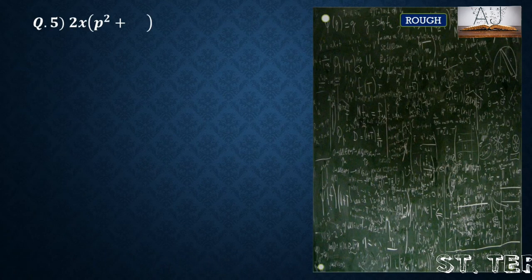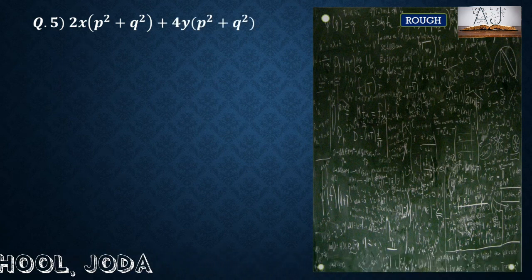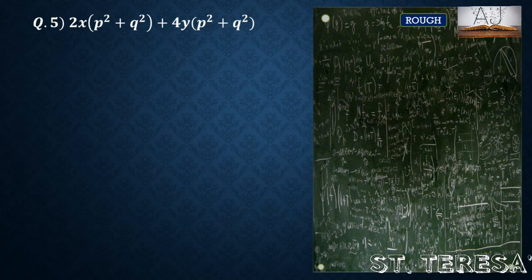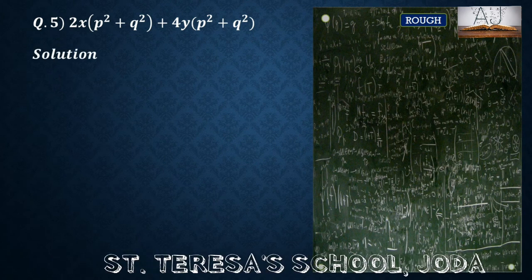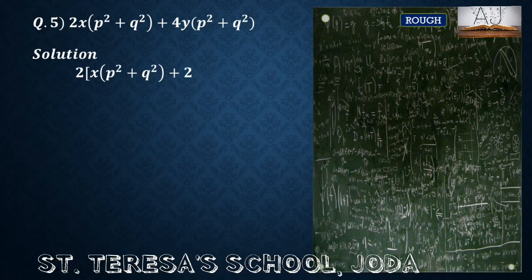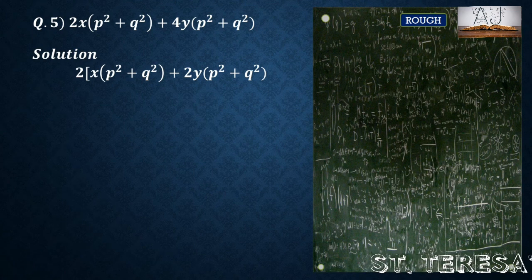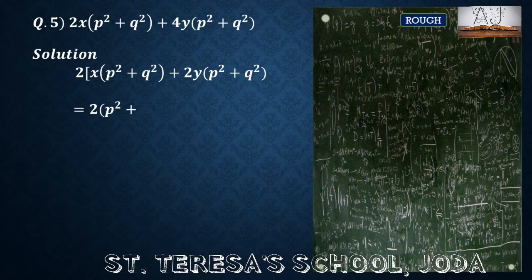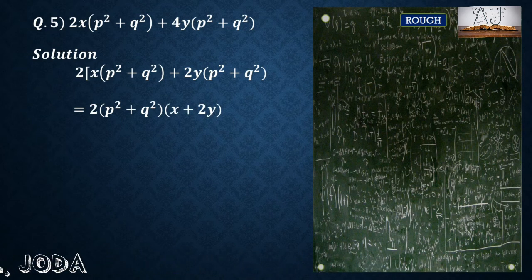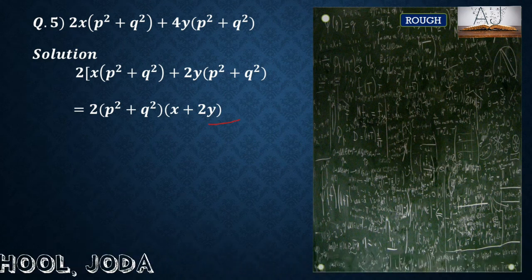Question number 5: 2x into (p square plus q square) plus 4y into (p square plus q square). From both terms we have 2 common. Taking 2 common, in the first term x(p square plus q square) is left, and plus 2y(p square plus q square). We can see that p square plus q square is also common. Taking that common, what is left in the first term is x, and in the second term is 2y. So the factors are 2, (p square plus q square), and (x plus 2y).